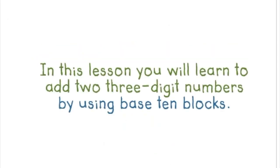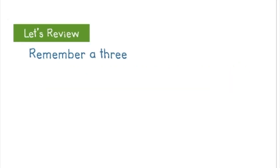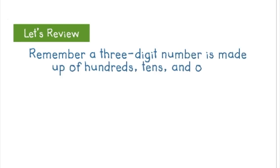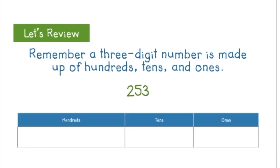In this lesson we're going to learn to add two three-digit numbers by using base ten blocks. That is our first lesson in this new unit. So let's review real quick. Remember, a three-digit number is made up of hundreds, tens, and ones. So for example, 253 has two hundreds, five tens which equals 50, and three ones.